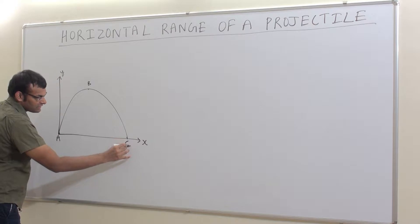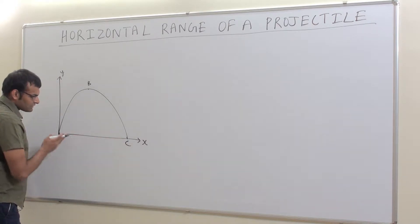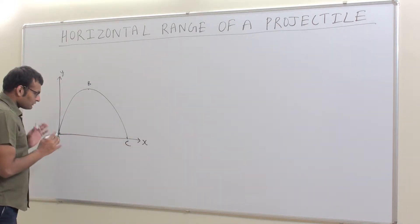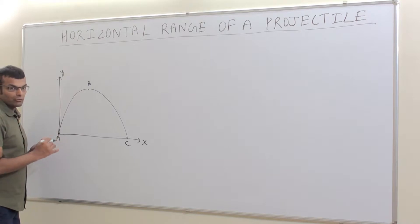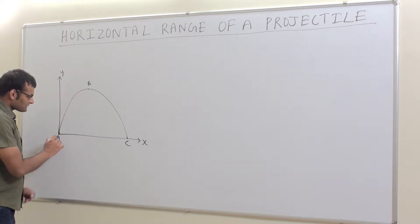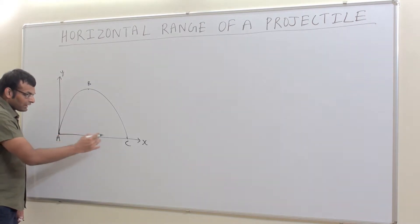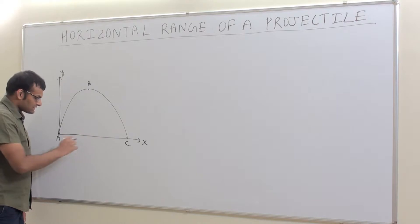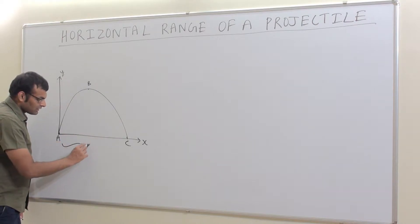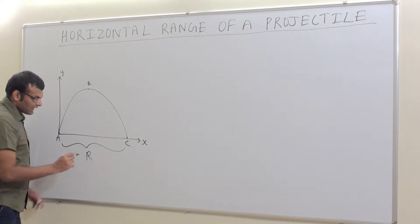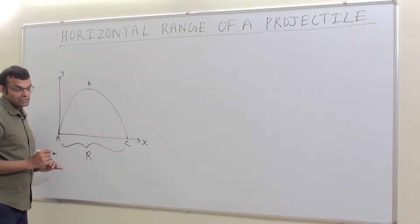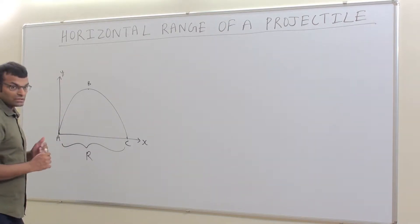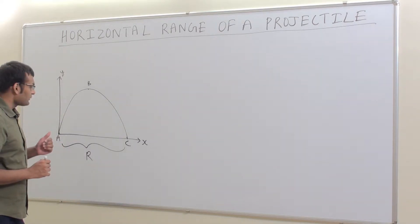The ball then reaches point C, which is at the same level as point A. The range we are going to calculate is the displacement between A and C in the horizontal direction, and I am indicating it as R.